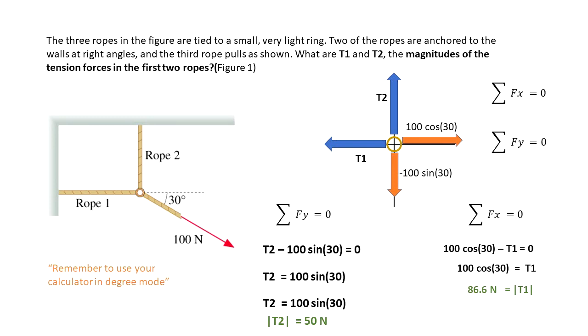Then we are going to do the summation of the forces in the X direction that's equal to zero. So 100 cosine of 30 minus T1 is equal to zero. We do some algebra, and we get that T1 is equal to 86.6 newtons.